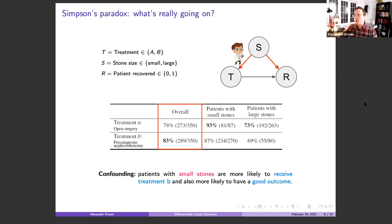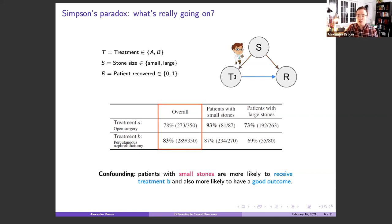What's really going on is that the size of the stone is acting as a confounder. There's a confounding variable S for size of the stone, affecting both recovery chances and the treatment the doctor will give. Patients with small stones were more likely to receive treatment B and also more likely to have a good outcome. This confounder is creating a bias in the analysis — biasing the relationship between treatment and recovery. To reason about the causal effect, we want to isolate the direct edge from treatment to recovery, irrespective of this bias.